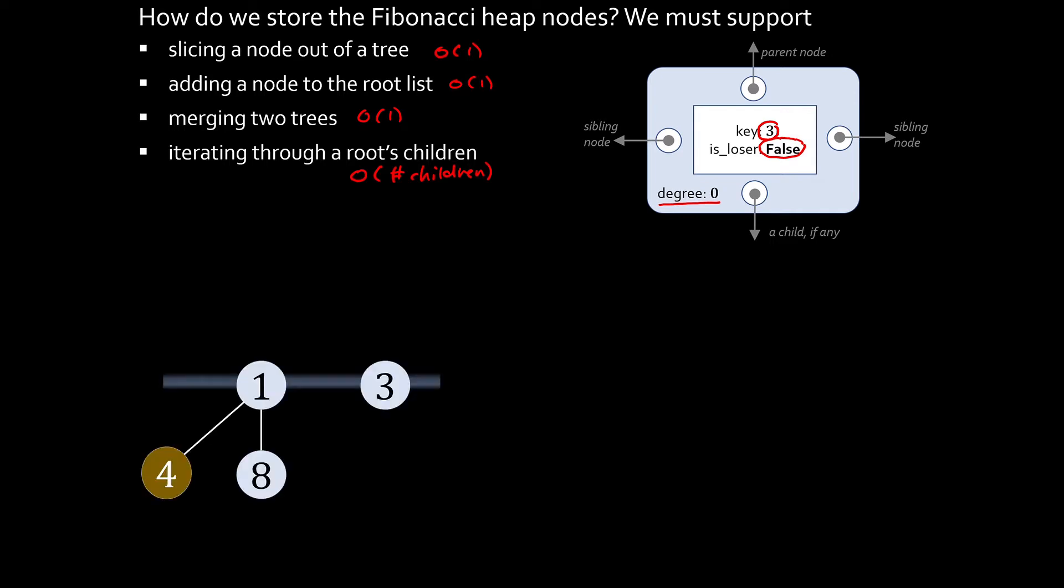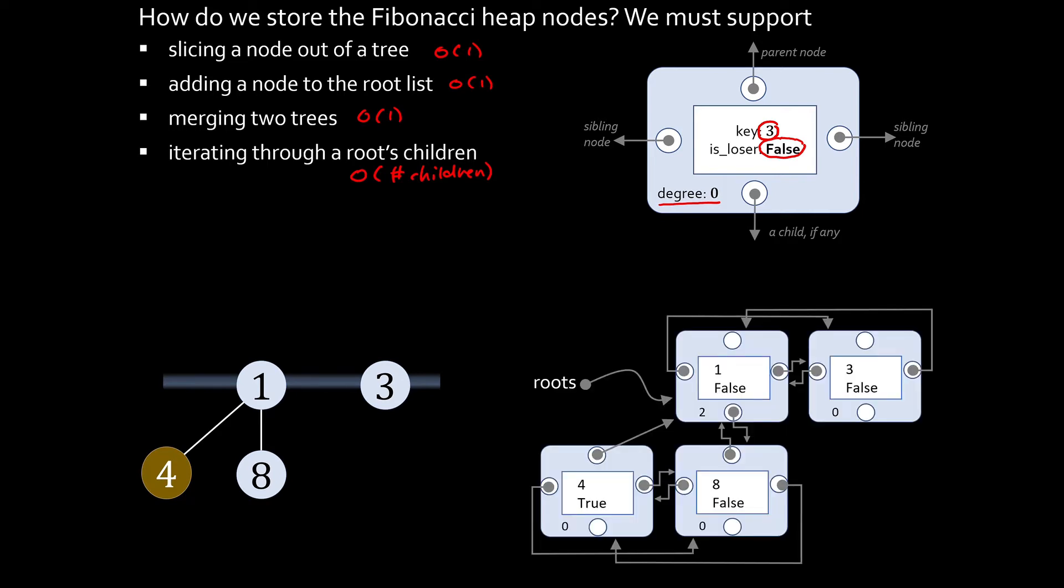So for example, if we see this Fibonacci heap with four nodes, it might be represented like this. We're storing here each list of siblings as a circular doubly linked list. This makes it easy to slice a child out. You just need to repair the links of each of its neighbors. Okay, so that's about how we support all the operations on the Fibonacci heap nodes.